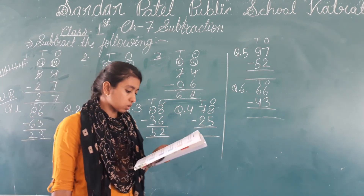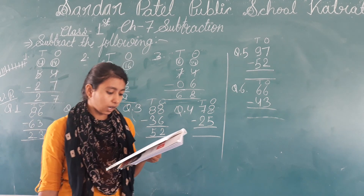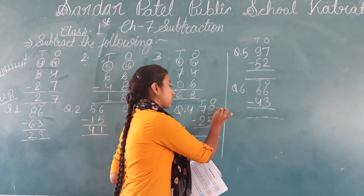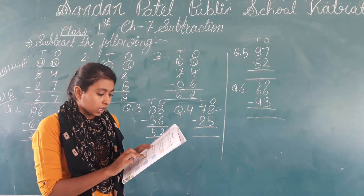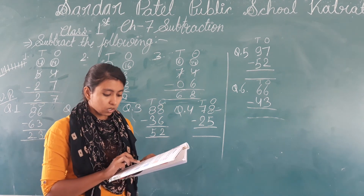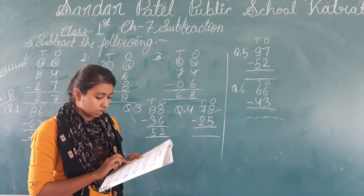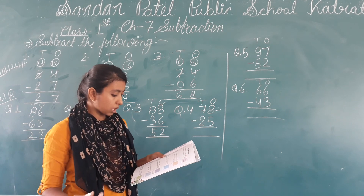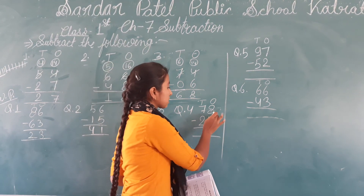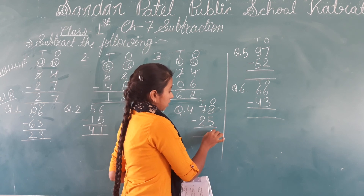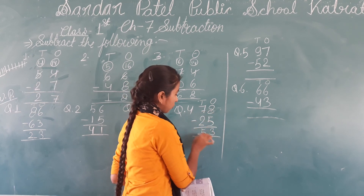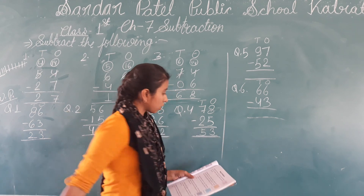The fourth question: the school library had 78 novels. If the library issued 25 novels, how many novels are left in the library? We do 78 minus 25: 8 minus 5 is 3, and 7 minus 2 is 5. So 53 novels are left in the library.